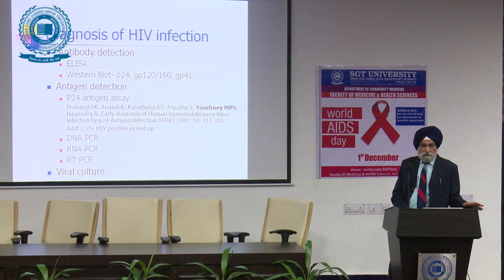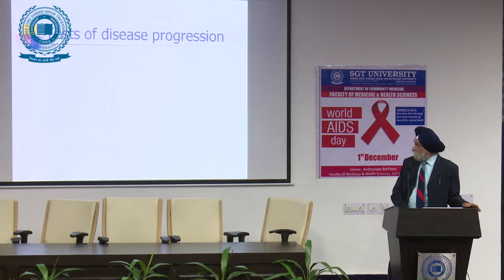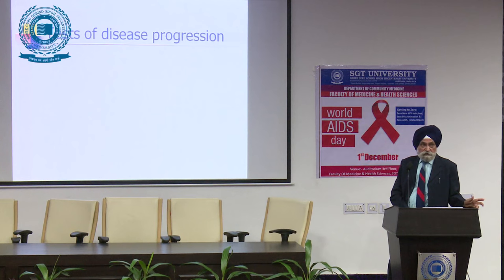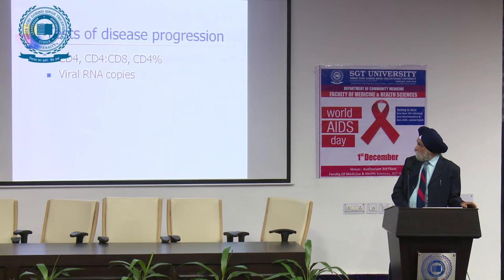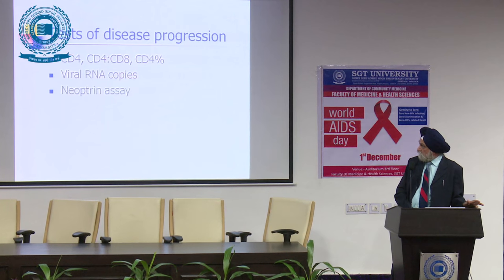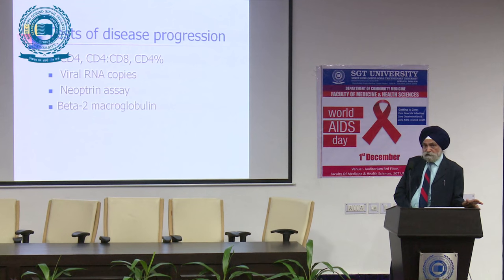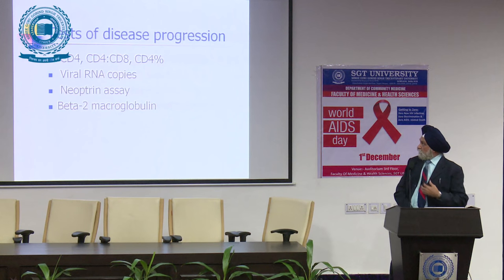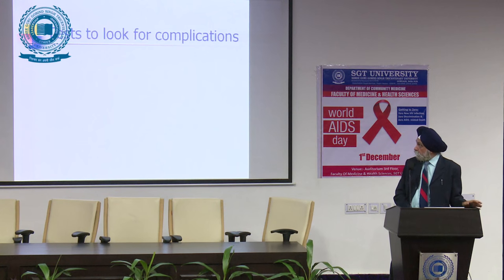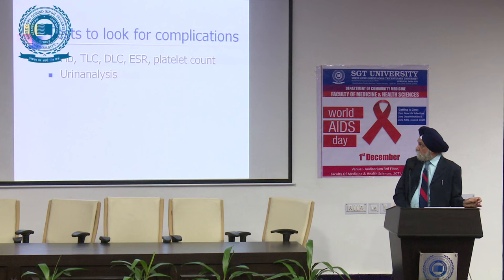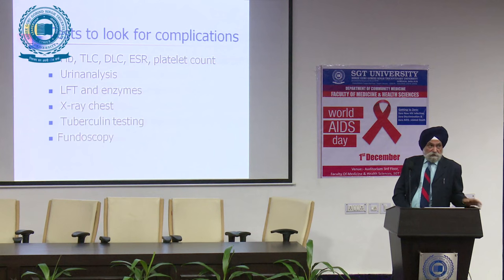These are various modalities for investigating HIV infection. For disease progression, CD4 and CD8 counts and their ratio are monitored, along with viral RNA copies by branched-chain DNA or plasma HIV RNA assay — as treatment is given, RNA copies fall. If CD4 count is falling, the disease is progressing. Routine investigations for complications include X-ray chest, tuberculin testing, and endoscopy to look for CMV infection.